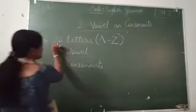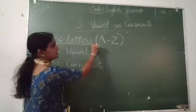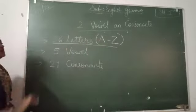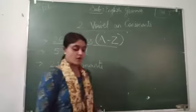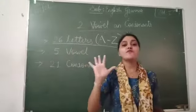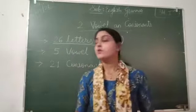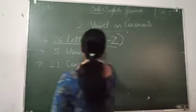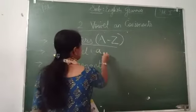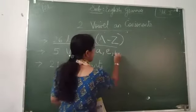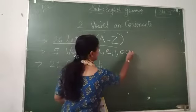Now there are 26 letters in English alphabet. Of these, there are 5 vowels. How many vowels are there? There are 5 vowels: A, E, I, O, U. Okay. There are 5 vowels: A, E, I, O, U.